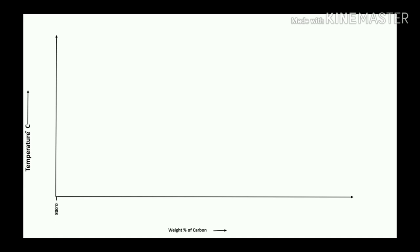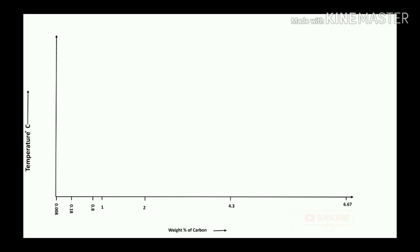Some important points to remember on the x-axis: 0.008% carbon, 0.18% carbon, 0.8% carbon, 1%, 2%, an important value of 4.3%, and finally 6.67% carbon.